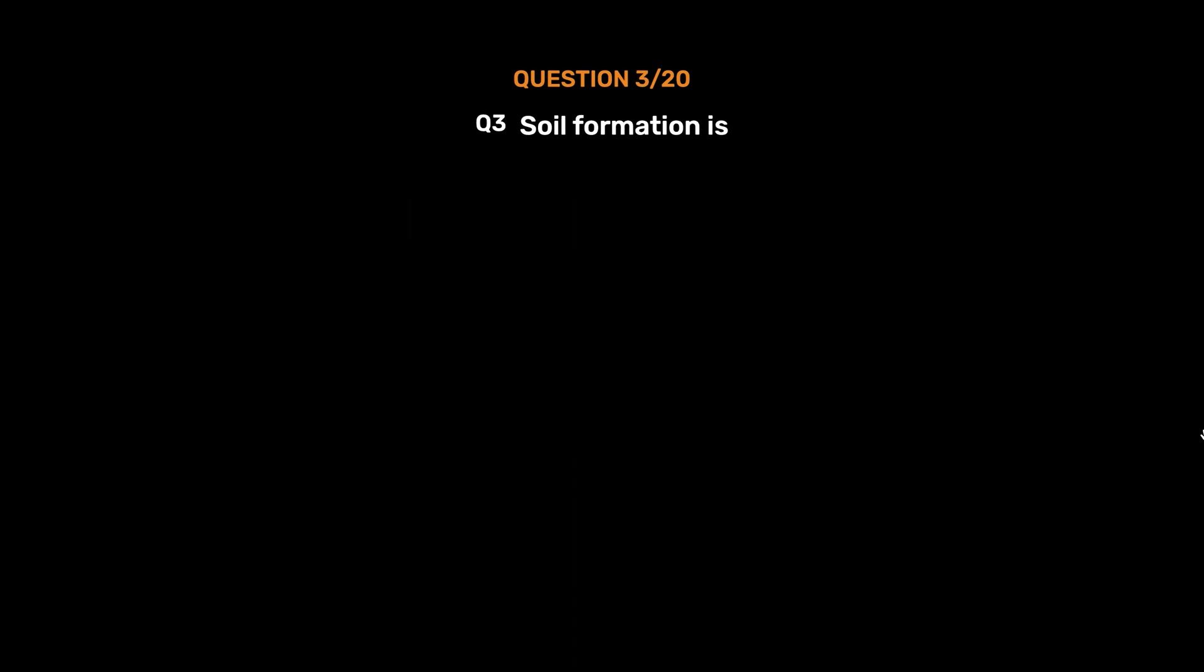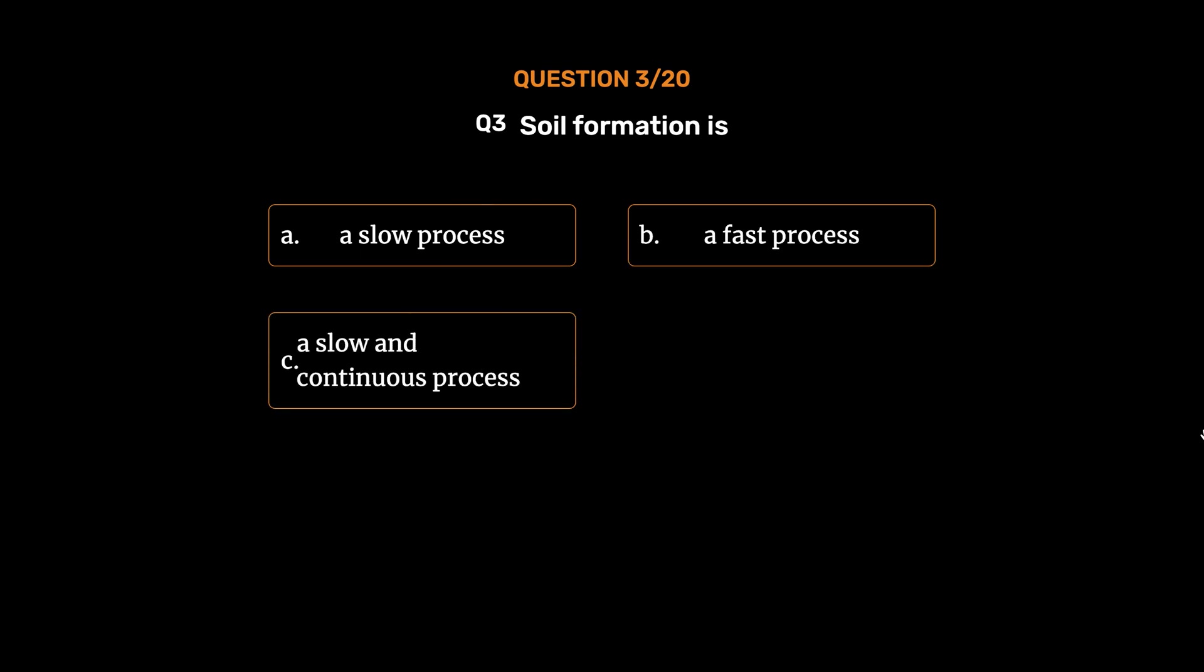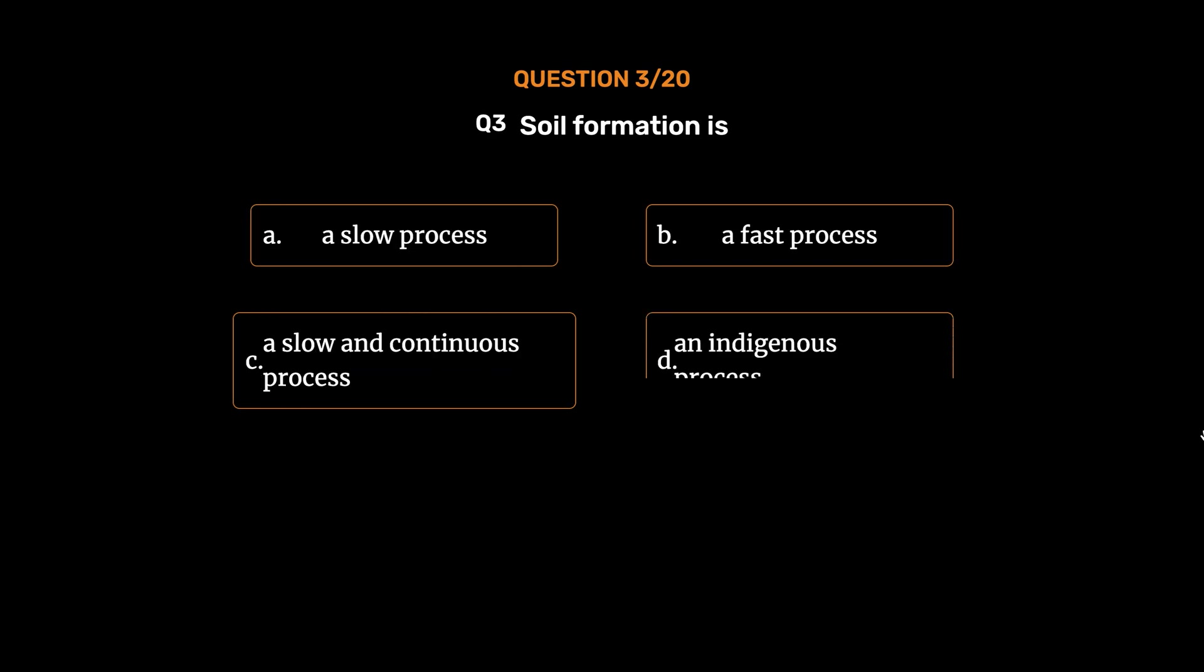Question number 3. Soil formation is: option A, A slow process; option B, A fast process; option C, A slow and continuous process; option D, An indigenous process. The correct answer is option C, A slow and continuous process.